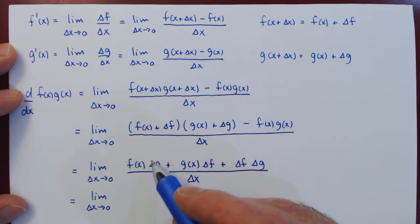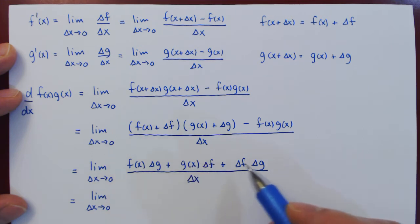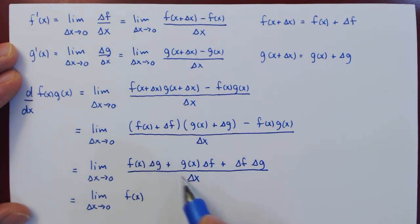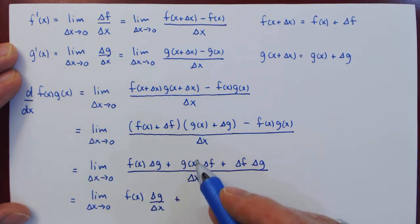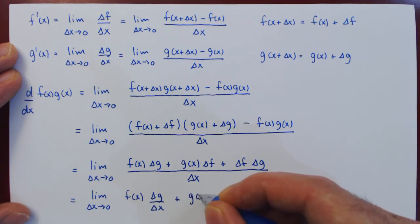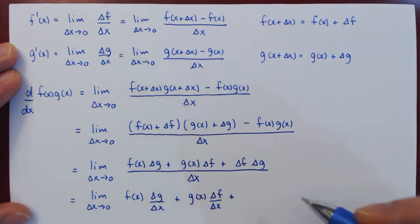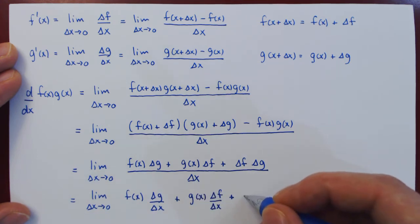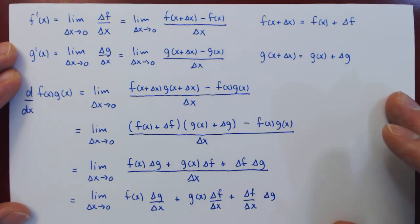We now have three terms on top, and the whole sum is divided by delta x, so every single term is divided by delta x. We split this into three separate fractions: f(x) times Δg/Δx, plus g(x) times Δf/Δx, plus Δf/Δx times Δg.